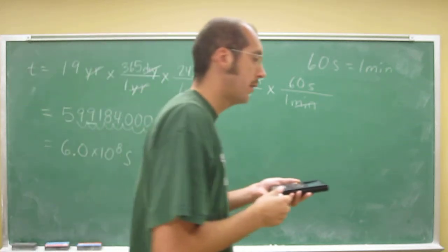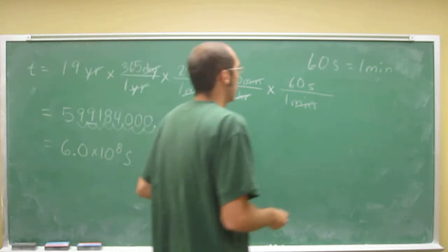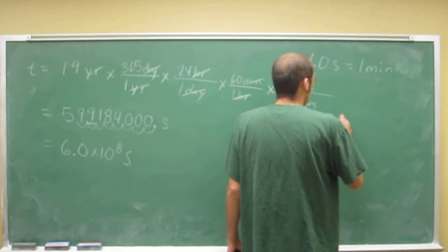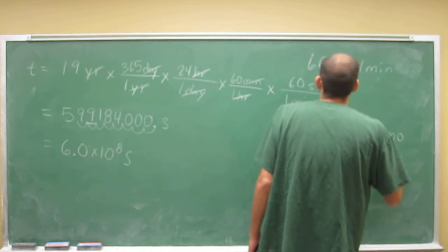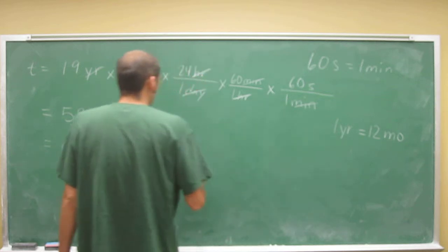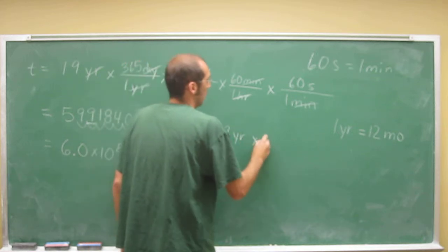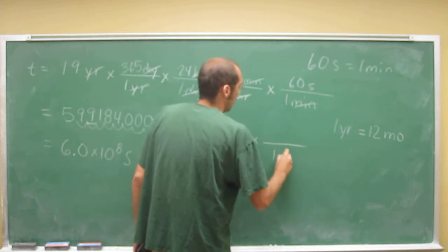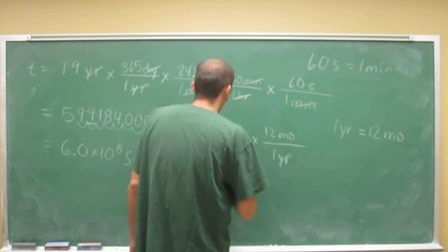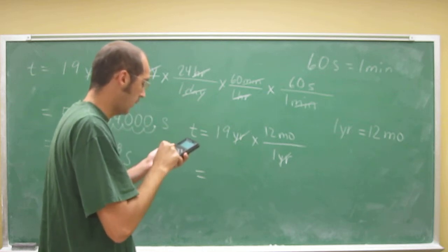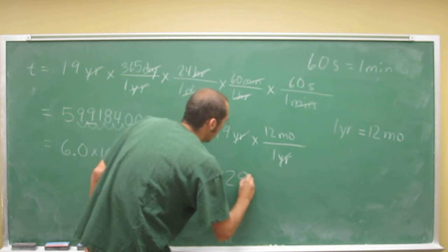How many months have you lived? Well, we can do conversion factors. Years to months. We know that one. In one year, there are 12 months. So that one's actually easier. Let's just do it over here. Time, 19 years. One year, 12 months. Cancel, cancel. 19 times 12, 228 months.